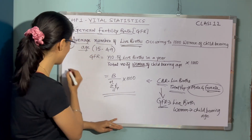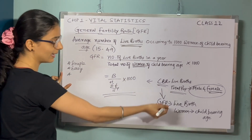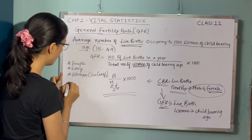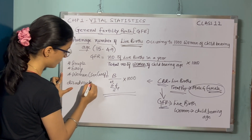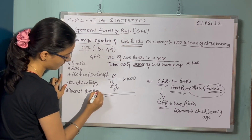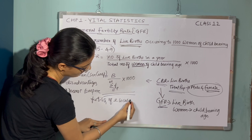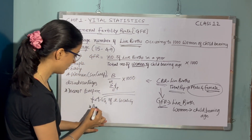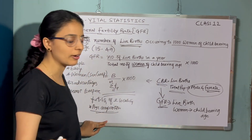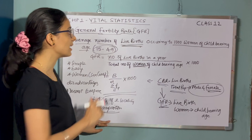GFR is very simple and easy to calculate, does not need much information. It gives information about sex composition since we are calculating particularly related to women. However, there are disadvantages: it does not help us compare fertility of two localities — there is no comparison. Also, there is no age composition; we are not calculating for different age groups separately, but collectively for the 15 to 49 age group.